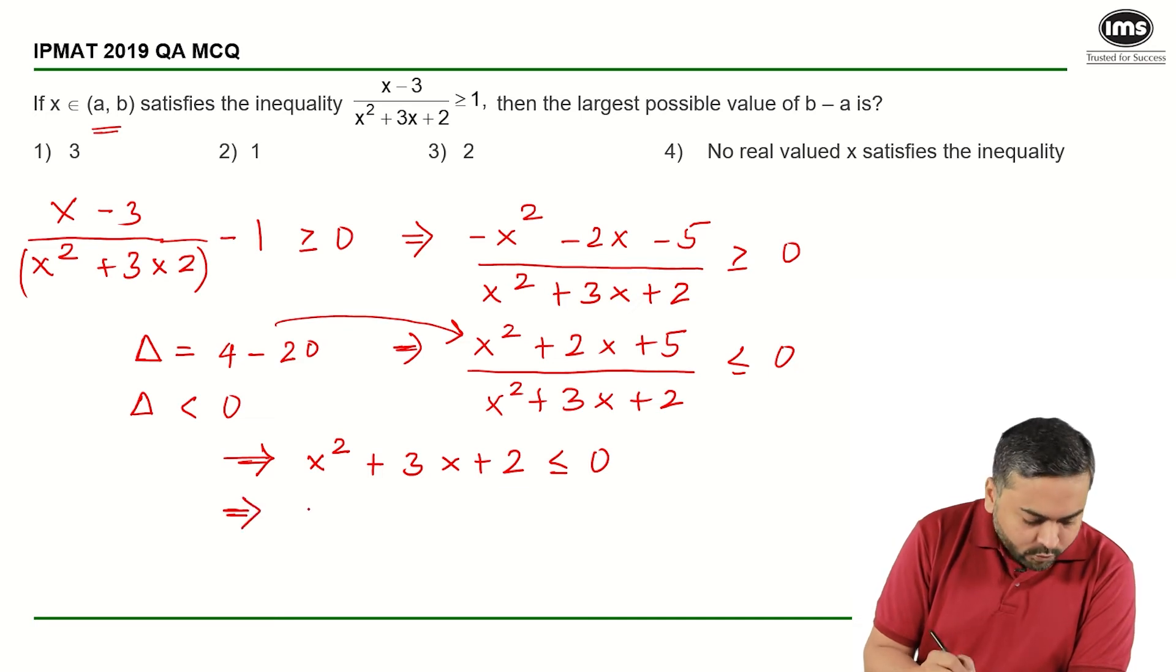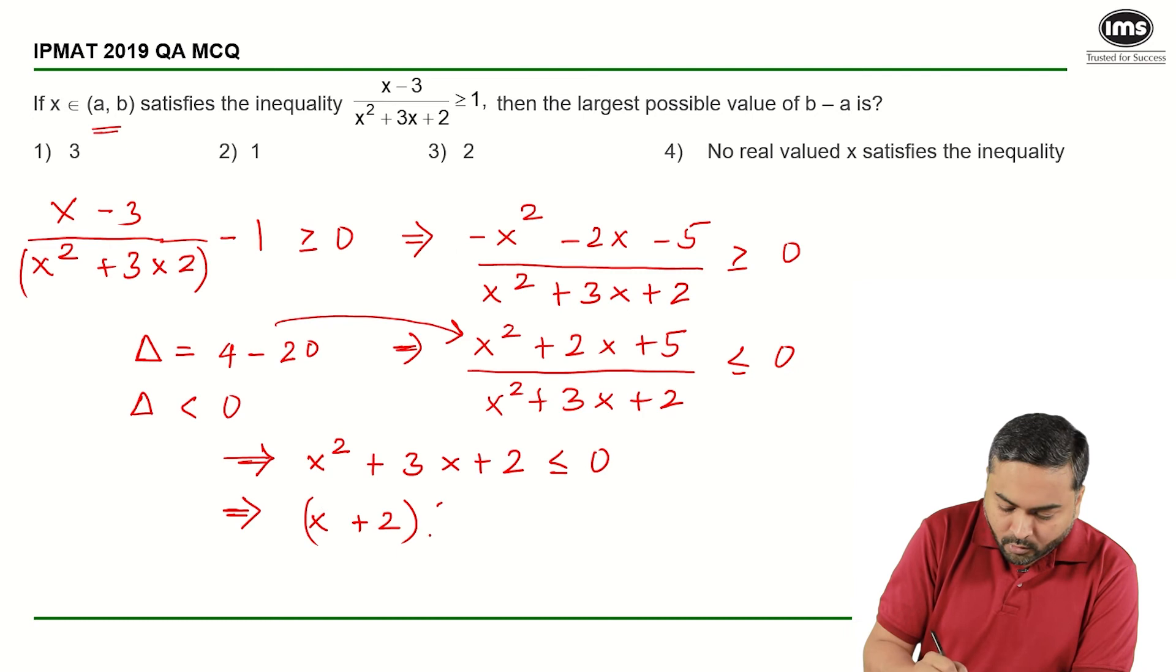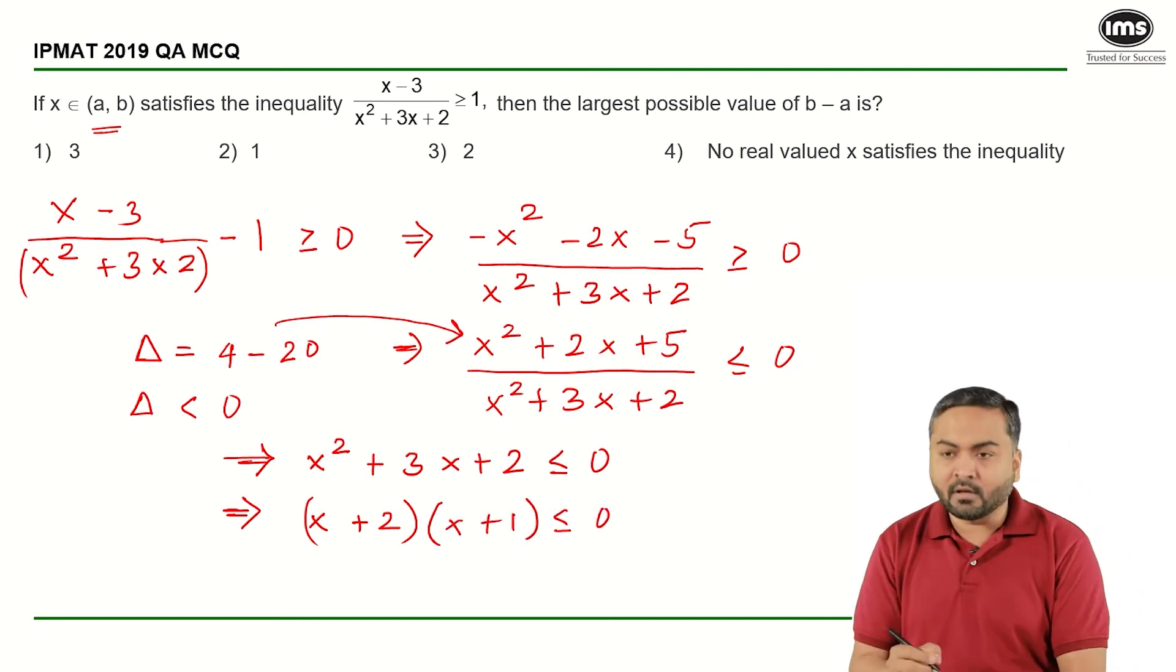When I solve this, what do I get? This is basically (x + 2)(x + 1) ≤ 0.